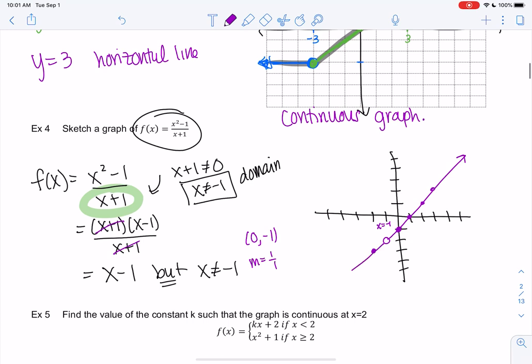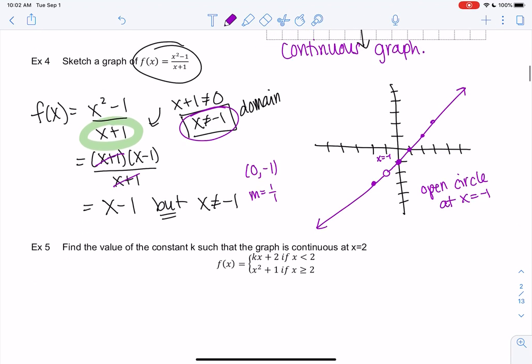It's going to look like a line just with an open circle at negative 1, and again that has to do with the domain. Because even though we're graphing x minus 1, it started as x squared minus 1 over x plus 1, and so we really have to consider the original function we're graphing. We just simplified it to make it easier to graph.